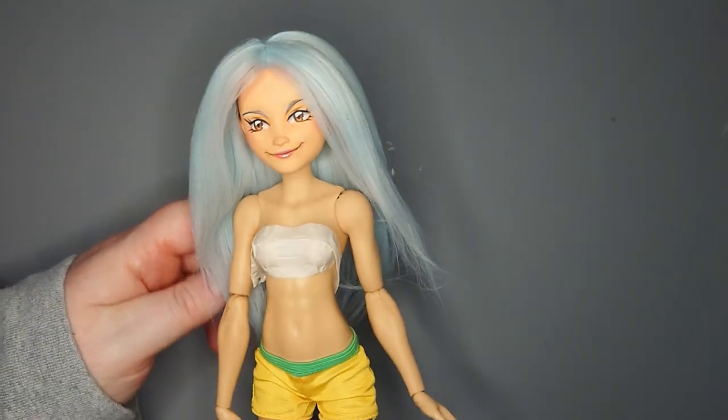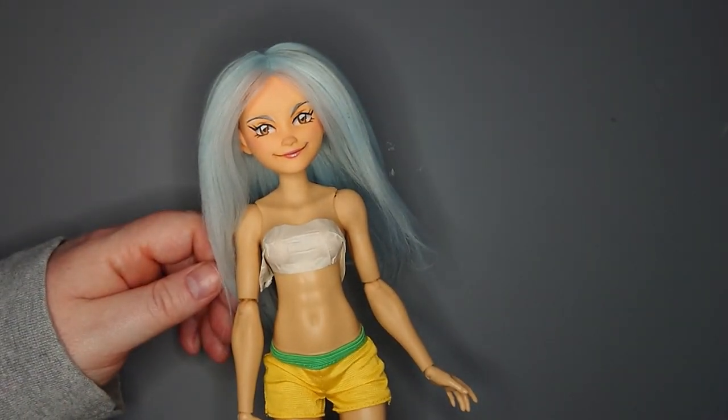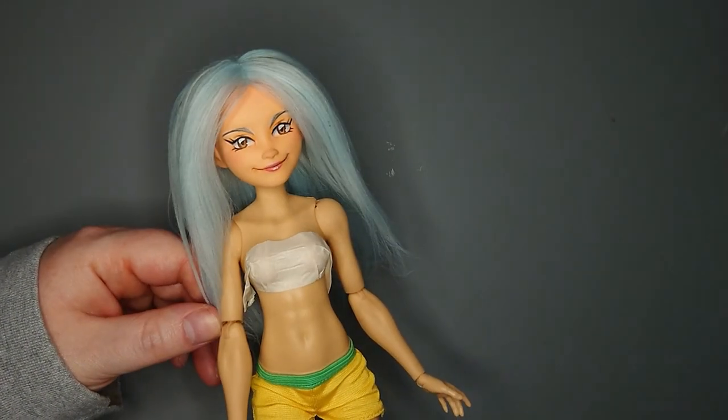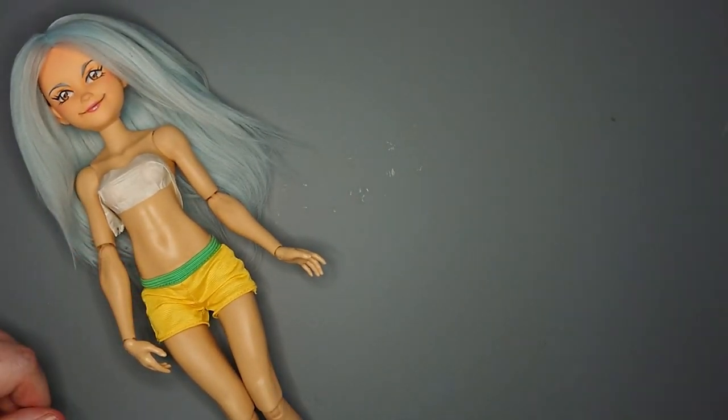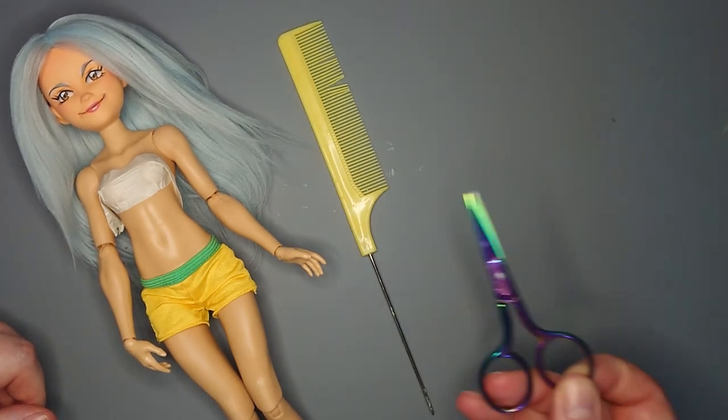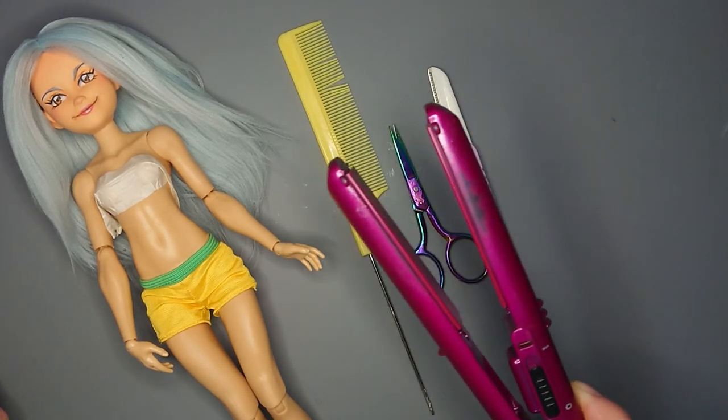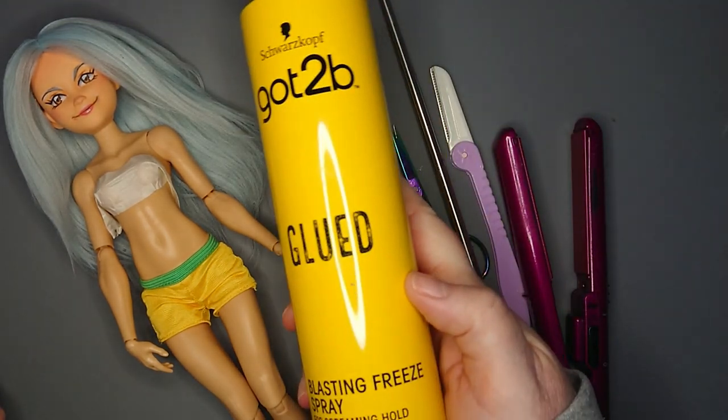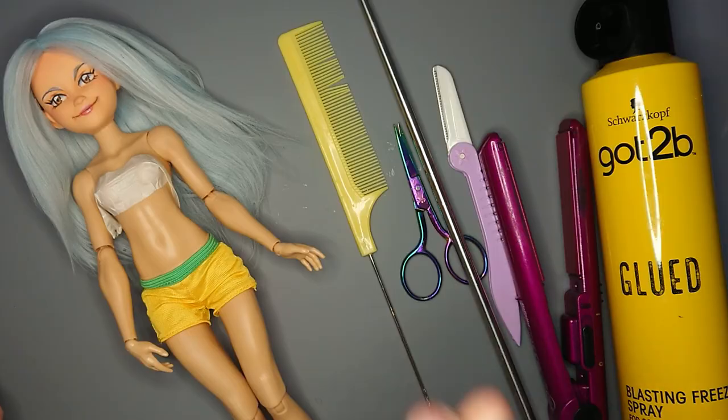I apologize, but I'll be doing the styling off-camera, as I have never done a style like this before, and I don't really have enough room in my filming space at the moment to use hairspray there. But here's all of the supplies I'm going to be using. A comb, thread scissors, an eyebrow razor, my hair straightener, a metal chopstick, and got to be glued hairspray, as it is the choice of cosplayers. I'll see you all in a bit.